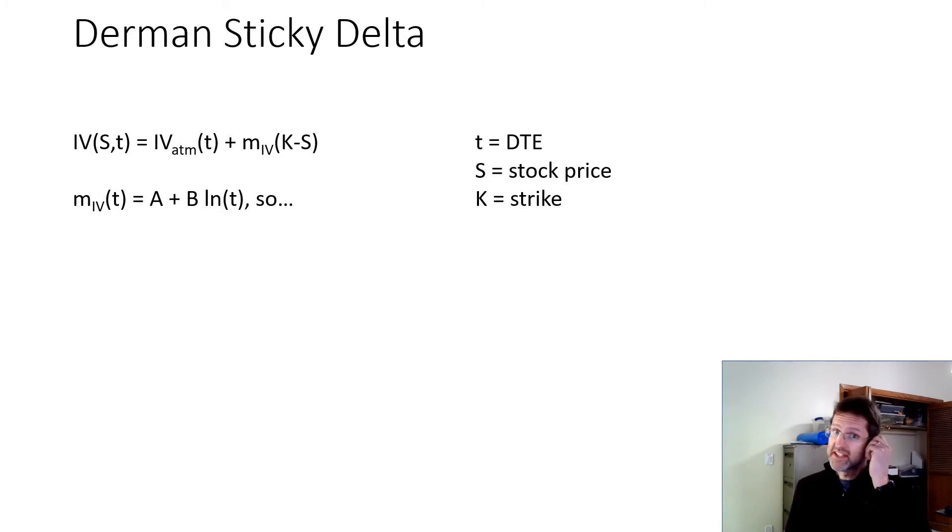Okay, so now let's go back to the sticky delta equation. I just said that m_IV is equal to A plus B times log of T. So if I substitute the second equation in the first, I get this equation.